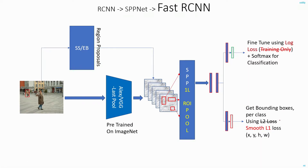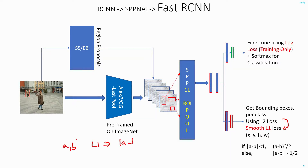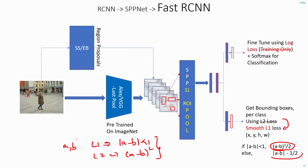In the bounding box regressor, another change is that instead of using the L2 loss they use the smooth L1 loss. L1 loss is just the absolute difference of two numbers a and b. L2 loss squares the differences. Smooth L1 loss is a combination of these two: if the absolute value of (a minus b) is less than 1 they use one formula, and if it is equal to or greater than 1 they use another formula.